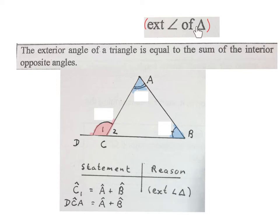This is the abbreviation we will use for this long statement. You can also call this angle C1 angle DCA with a cap on the C, and then that is equal to angle A plus angle B.